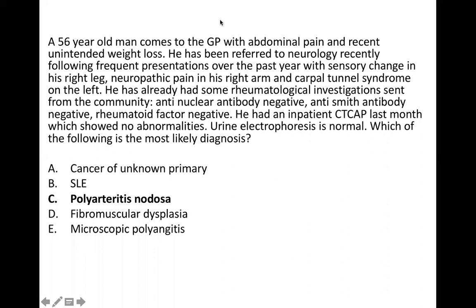A 56-year-old man comes in with abdominal pain and recent unintended weight loss, referred to neurology. He has sensory changes in his right leg, neuropathic pain in his right arm, and carpal tunnel syndrome on the left — loads of different things going on. This indicates mononeuritis multiplex — different neuritises in different areas. Rheumatological investigations: ANA negative, anti-Smith antibodies negative, rheumatoid factor negative. CT CAP and urine electrophoresis are both normal.